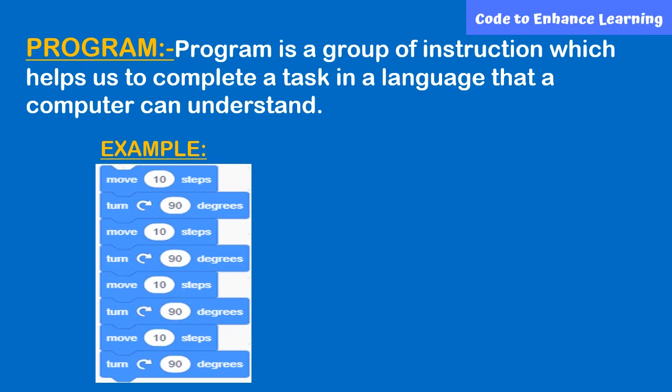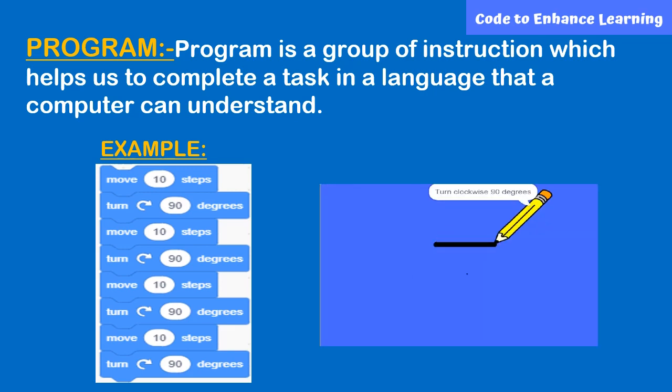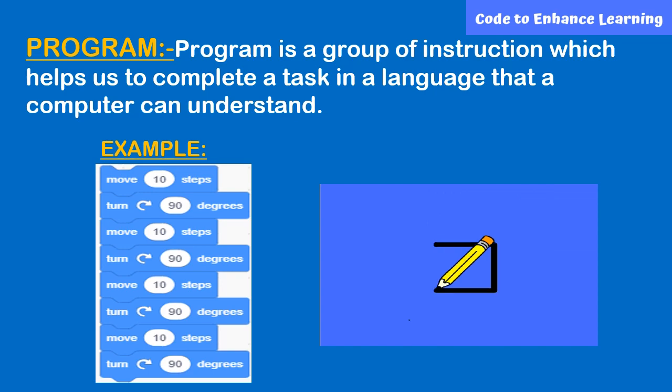Moving on to program. A program is a group of instructions which helps us to complete our task in a language that a computer can understand. In this picture, there is a program written in Scratch language which the computer can understand to draw a square. A program is also called code or a script.